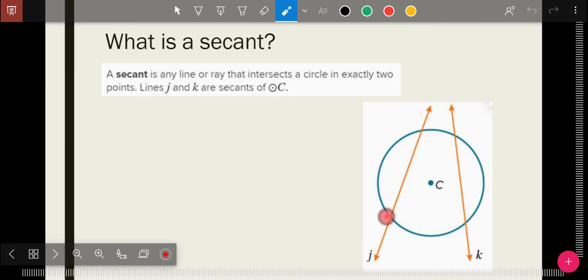A secant just goes further than that. So secant not just hits the circle or goes through the circle twice, but goes beyond the circle. Secant could start on the circle and just go beyond it on one side. In this picture, both lines J and K are secants of circle C.